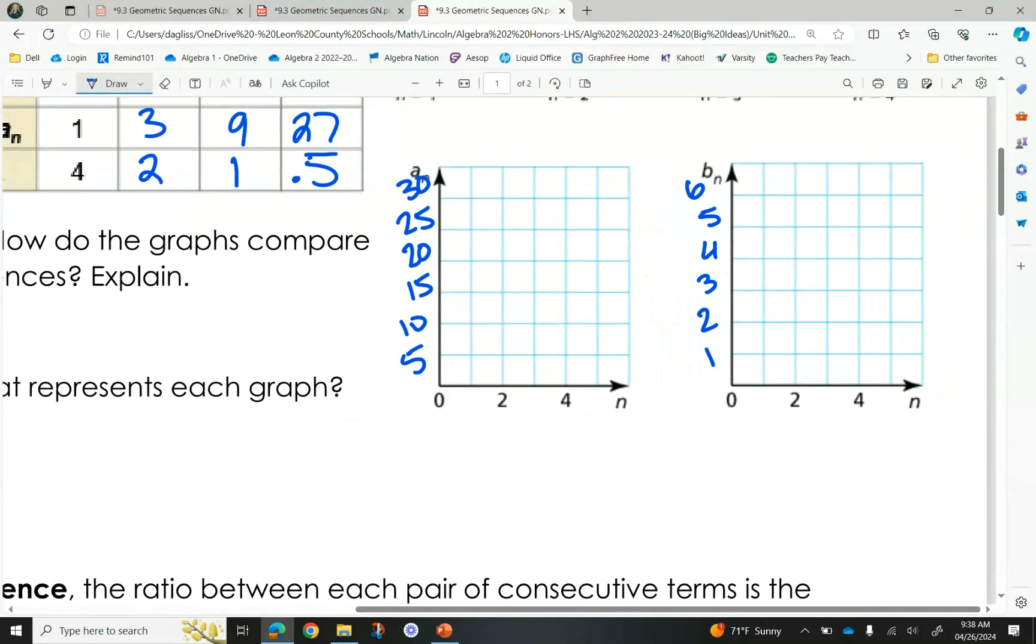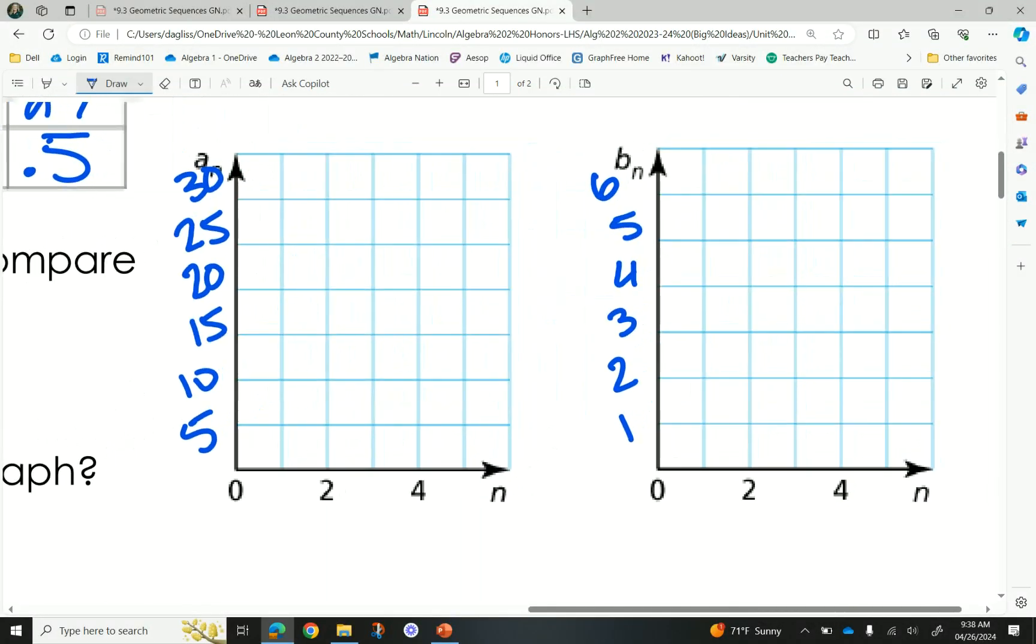Alright. Who wants to plot some points for me? Alright, Dylan plotted our points for us. We have 1, 1 right here, 2, 3, 3, 9, and then 4, 27. And then our branches, we have 1, 4, 2, 2, 3, 1, excuse me, and then 4, 1 half. Nice.